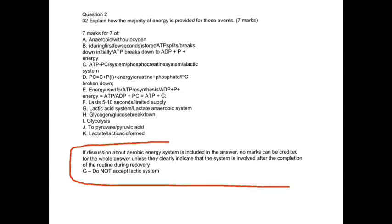From the mark scheme, there are 11 ways of getting your seven marks. The most important note is at the bottom: if discussion about the aerobic energy system is included in the answer, no marks can be credited for the whole answer unless the answer clearly indicates the system is involved after the completion of the routine during recovery. Also, do not accept 'lactic system' — it must be either 'lactic acid system' or 'lactate anaerobic system'.